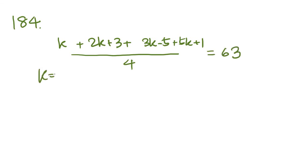184. This is the average arithmetic mean of four numbers, and they give us the four numbers, so K and 2K plus 3 and 3K minus 5 and 5K plus 1. So the average of these four numbers, let's add them together over 4, is equal to 63. What is K? Cross multiply, and we get, well, you know what, let's add up all the Ks too. So 2K plus K is 3K plus 3K is 6K plus 5K is 11K. So 11K plus 3 plus 1 is 4 minus 5 is minus 1. So 11K minus 1 equals 4 times 63.